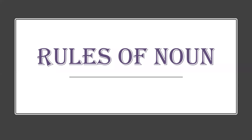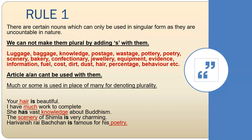Now comes an important topic: rules of nouns. All these rules are very important and are going to help you solve error spotting questions. Rule number 1: There are certain nouns which can only be used in singular form as they are uncountable in nature. We use the singular verb with them. If there are words like 'luggages' or 'postages' in a question, you can spot the error and correct the question easily.